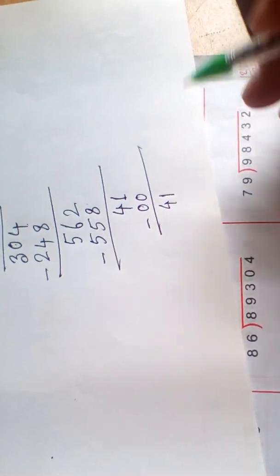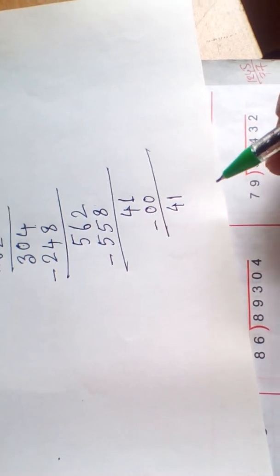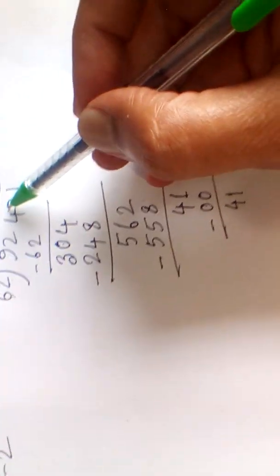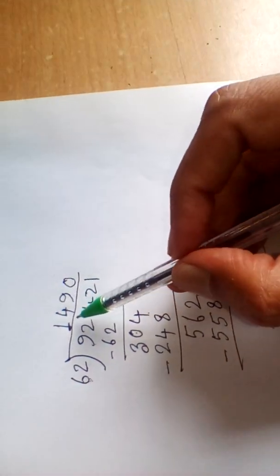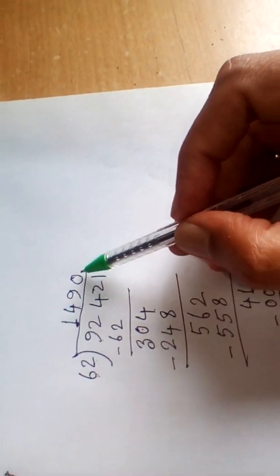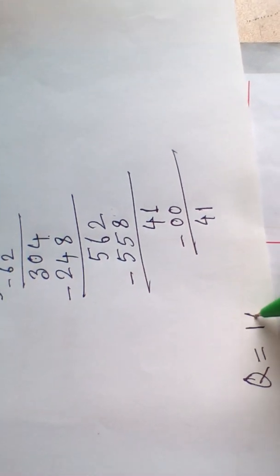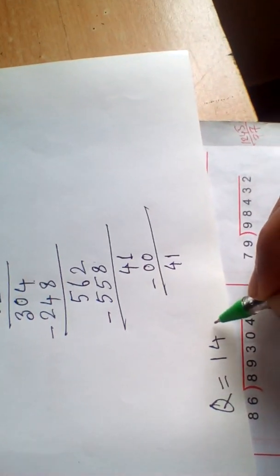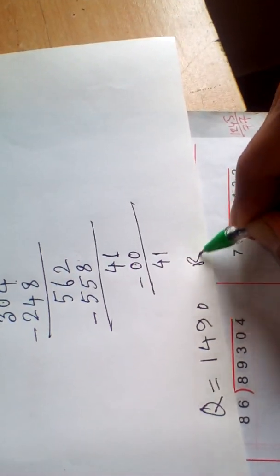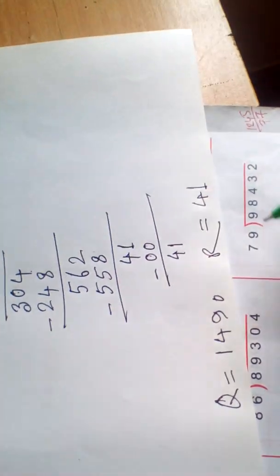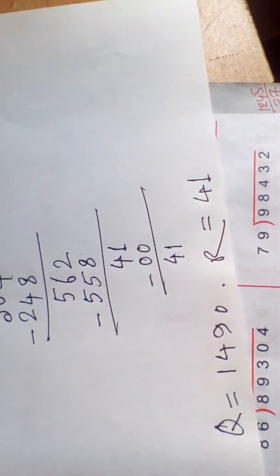Our division problem is complete. So we can write the quotient: quotient equals 1490. And remainder equals 41. Our class is finished today. Next time, see you again tomorrow.